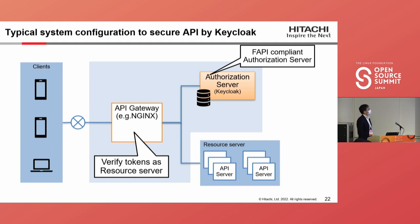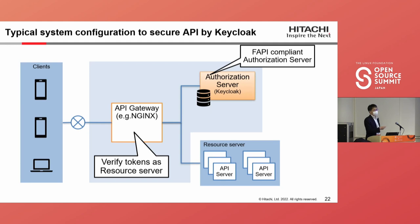This is a typical system configuration to secure APIs by Keycloak in a real system. We use Keycloak as an authorization server for APIs — this is a FAPI-compliant authorization server. We also use an API gateway to verify the access token required for FAPI. If there are many APIs, implementing the token-checking logic in each API server is difficult, so we implement the token-checking feature in the API gateway.